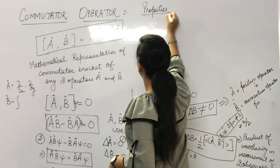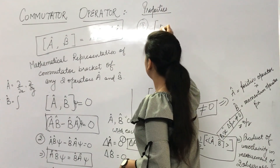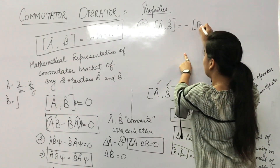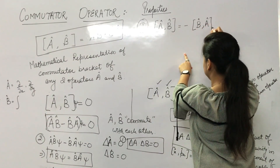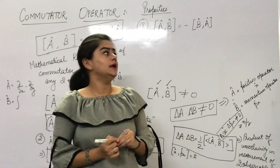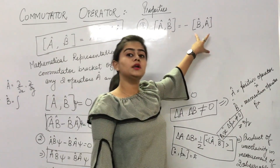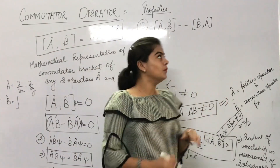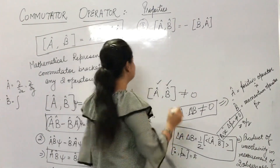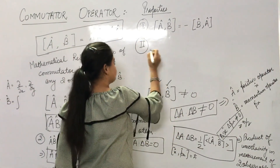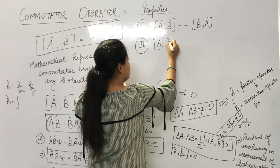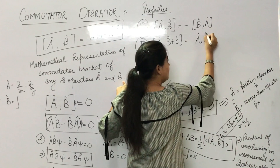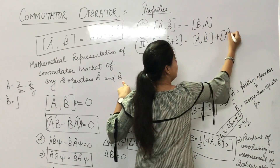So first, Property 1 of commutator bracket: [A, B] = −[B, A]. This is the first property. Now the second property: [A, B+C] = [A, B] + [A, C]. Note: we are not saying A and B commute here — we are doing a general discussion of properties, not assuming the commutator is zero.